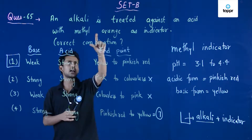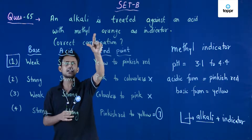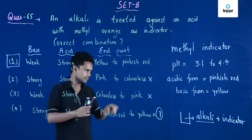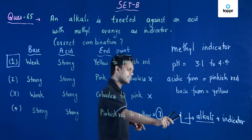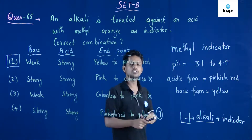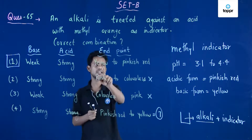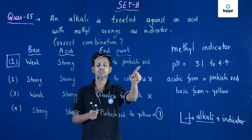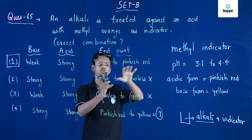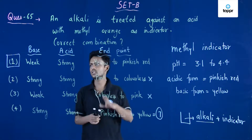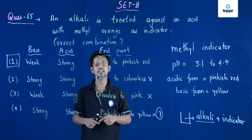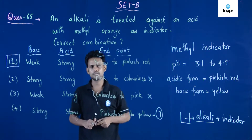Here, methyl orange is the indicator and we started with the alkali, so the color should be yellow initially and then go to pinkish red. Therefore option number one is the correct answer.